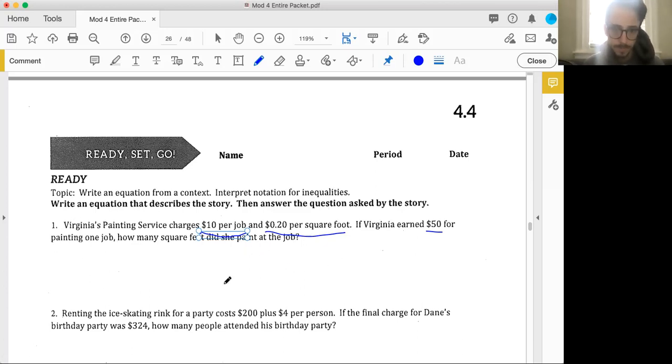No matter what, this is one job. We have that one-time fee of $10. We're paying that one time. This happens just one time. Then the 20 cents per square foot, do we add that on? Subtract that on? Hopefully you're saying we add that on, and that would be multiplying by the number of square feet. If Virginia earned $50, it's as if we're comparing this to $50, and we're being asked how many square feet did she paint at the job?